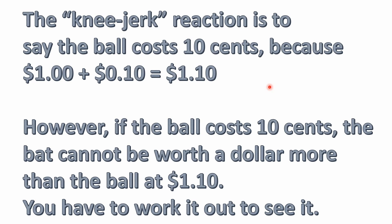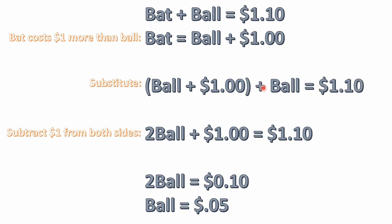So you really have to work this one out to see what the answer actually is — it's a nice little teaser. What I like to do is use variables. I'm calling them 'bat' and 'ball' — to me it's just easier. I'm saying bat plus ball equals $1.10, because that's what they said: the bat and the ball together cost $1.10.